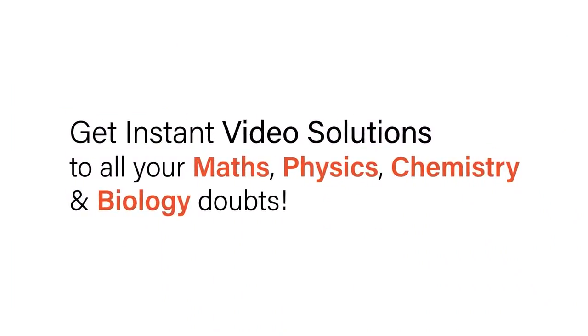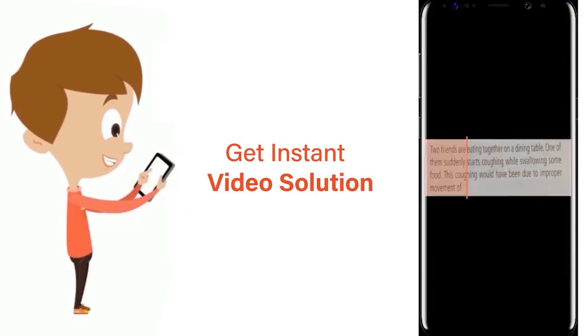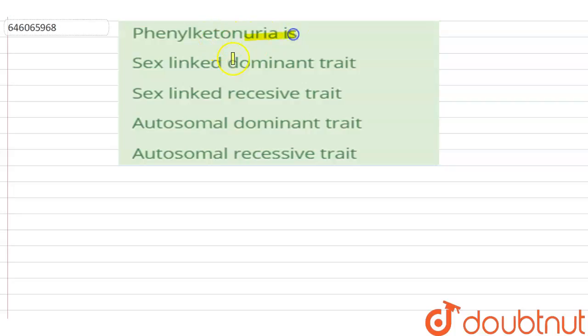With Doubtnet, get instant video solutions to all your math, physics, chemistry, and biology doubts. Just click the image of the question, crop it, and get instant video solution. Download Doubtnet app today. Hello students, the question is: Phenylketonuria is - Sex linked dominant trait, Sex linked recessive trait, Autosomal dominant trait, or Autosomal recessive trait?